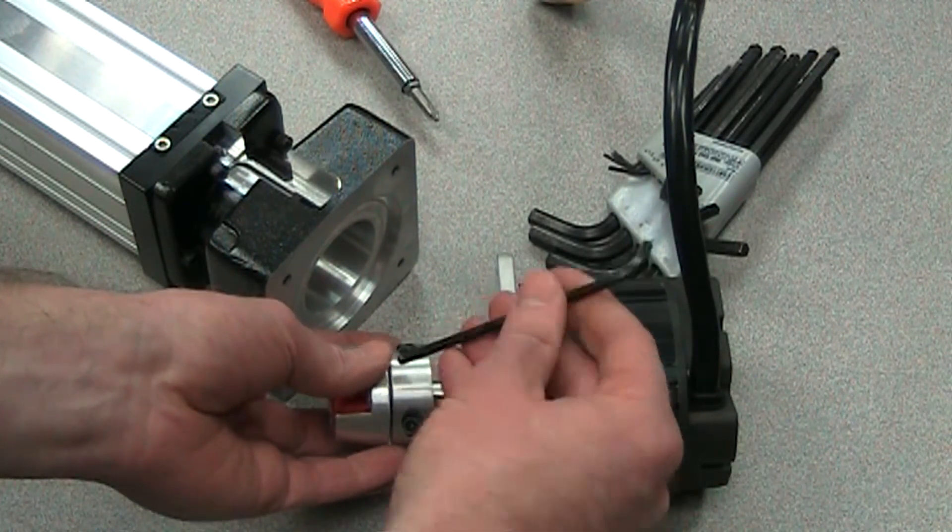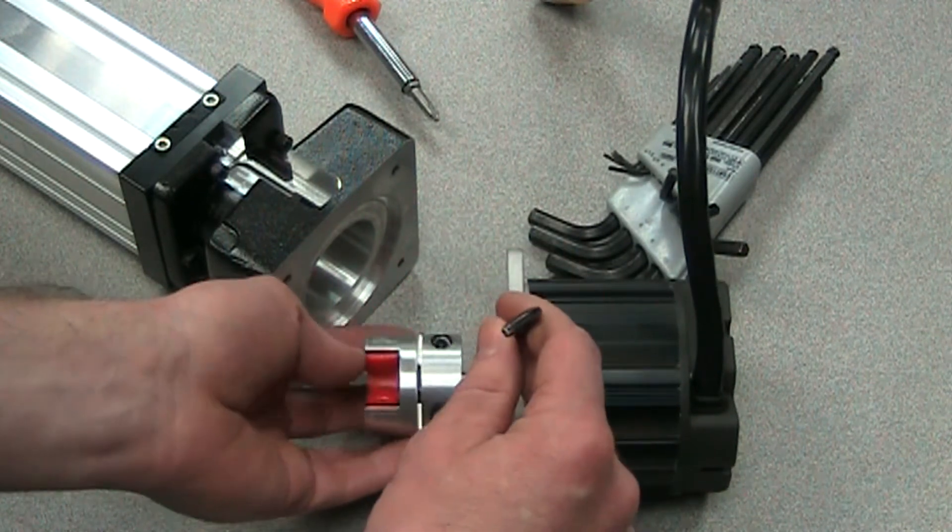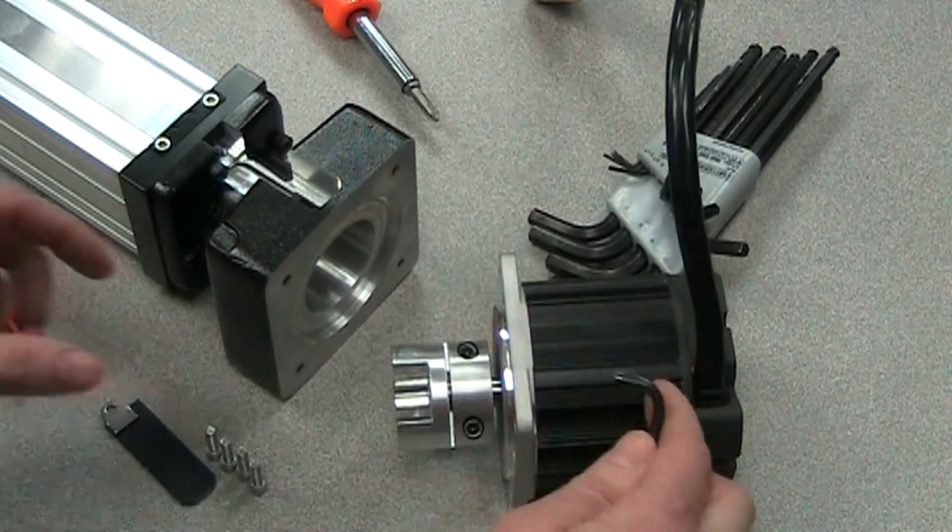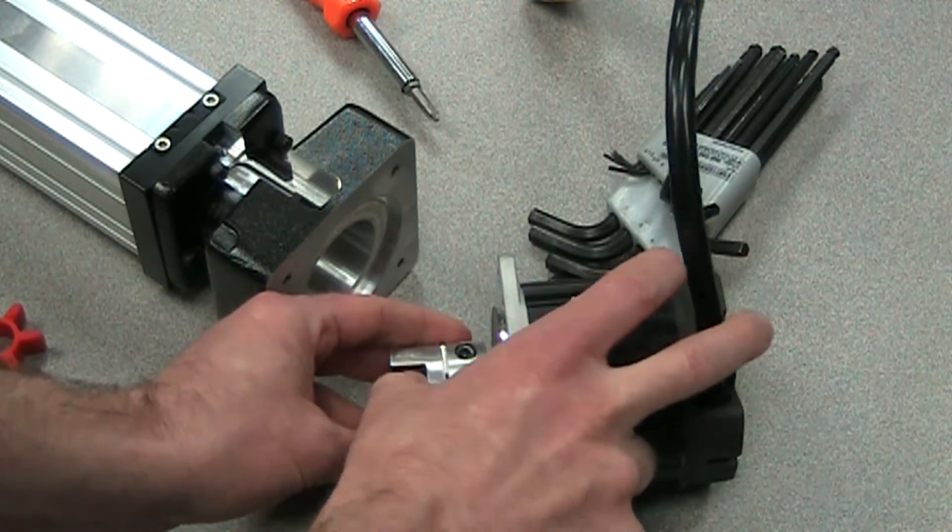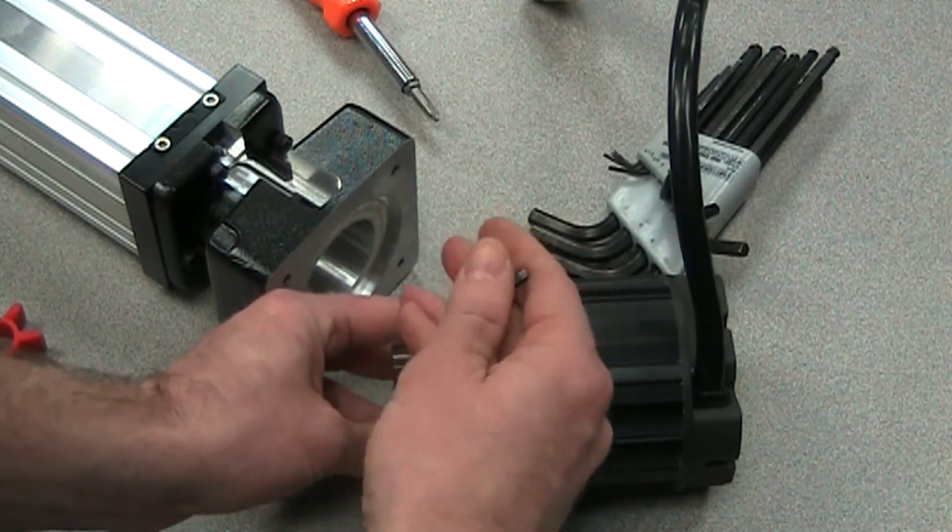First of all, we'll need a couple of Allen wrenches, and these are metric on this MXE actuator. So what we'll want to do is remove the spider, line up the end of the shaft of the motor, and tighten up these screws.